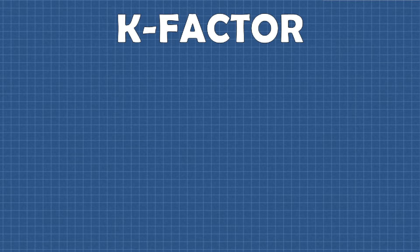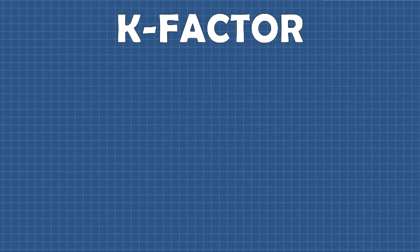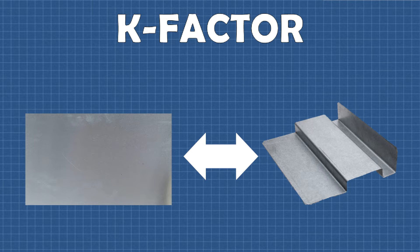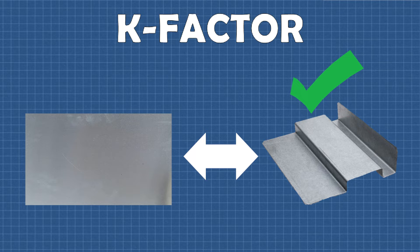In broad terms, the sheet metal k-factor is a measurement used in the development of flat blank sizes for sheet metal parts that are to be formed. In other words, it helps us get the size of a flat piece of sheet metal right so that after the part is formed the dimensions are correct.